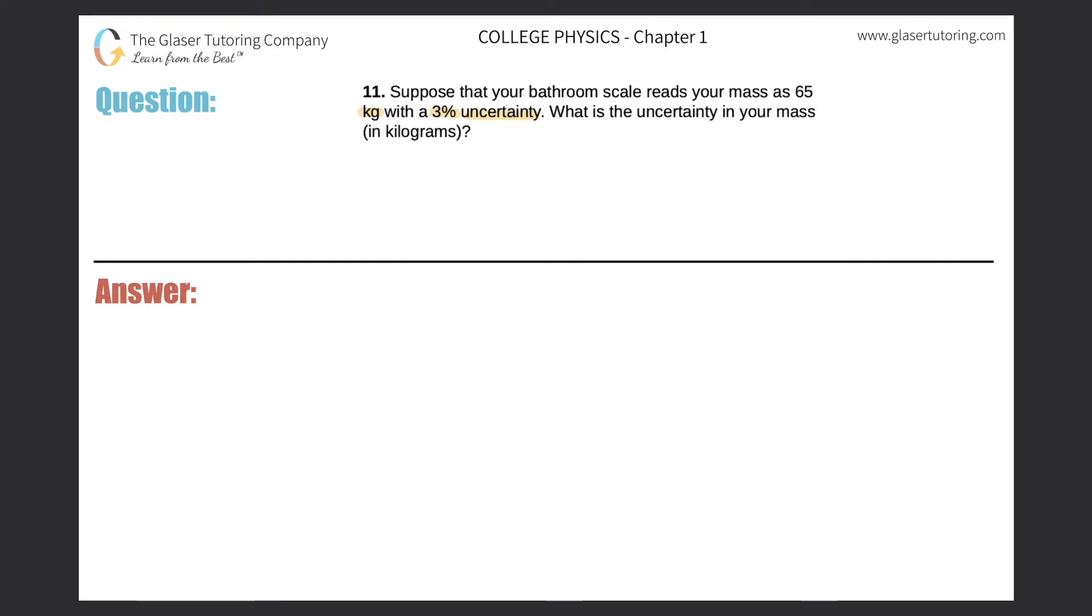Okay, so first, what does this term uncertainty mean? Well, I think we can kind of all agree that it means that we're unsure. So the scale reads out. So when you step on this thing, you step on the scale. I don't know what this is, but pretend it's a scale.